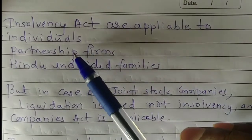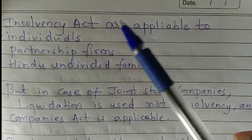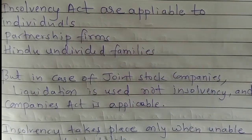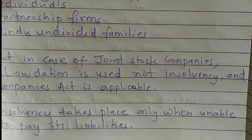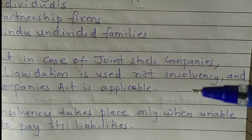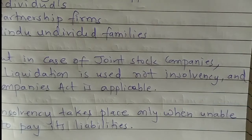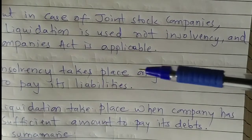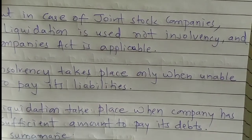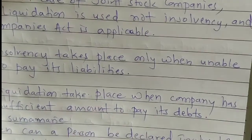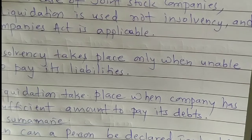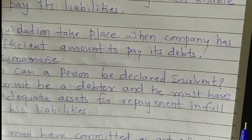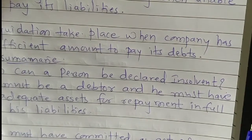These insolvency acts are applicable to the following: one, individuals; two, partnership firms; and three, Hindu undivided families. But in the case of joint stock companies, liquidation is used, not insolvency, and the Companies Act is applicable in such a case. Insolvency takes place only when a partner is unable to pay its liabilities, but in the case of liquidation, liquidation takes place only when the company has sufficient amount to pay its debts.